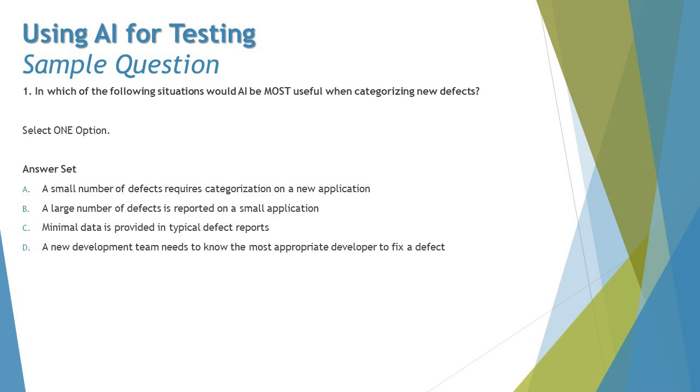Talking about the next option, a large number of defects is reported on a small application. Now this is very limited. We have a large number of defects but on a very small application, and this small application could be a good candidate for us to talk about AI. There is most likely to be benefit of identifying duplicates because the application is limited and the number of defects are high. AI can do this job by identifying duplicates in the reported defects and see how we can reduce it to the unique ones.